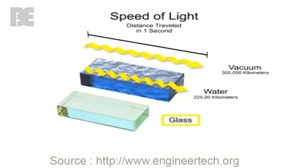In glass, light travels at 67% of its speed in a vacuum, so the light speed is 300,000 times 0.67, or about 200,000 kilometers per second.